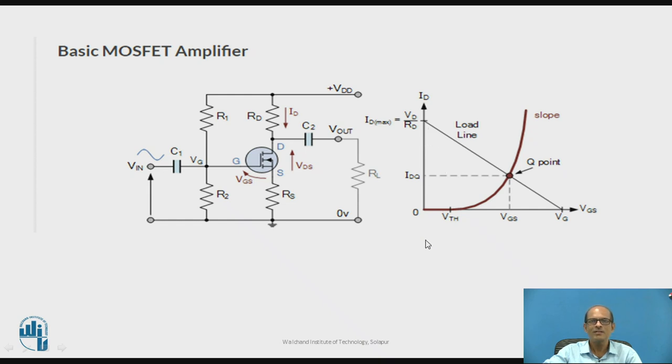On the right-hand side, you can see the DC load line and the transfer curve, ID versus VGS. The operating point is the point of intersection of this transfer curve and the load line because the drain current flowing through Rd and the drain current flowing through the MOSFET are same because these resistances and the MOSFET are connected in series. The operating point is Q. At this operating point, VGS is VGSQ and this is IDQ.